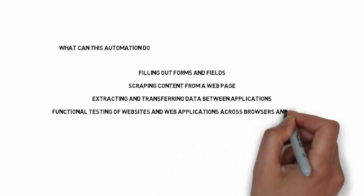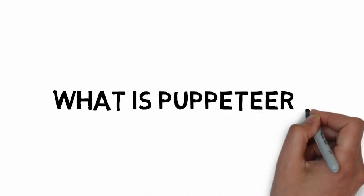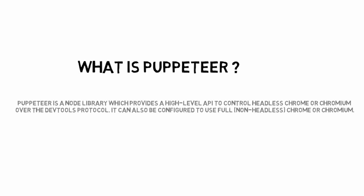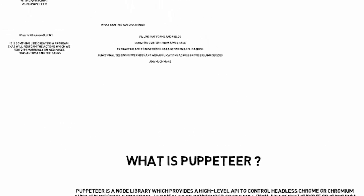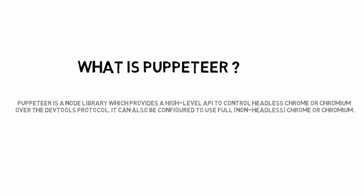In web scraping, a virtual browser will go to that website and can do pretty much everything you can do manually. Puppeteer is an open source library provided by Google which can be run in a Node.js program, allowing you to control a Chrome browser virtually. It can also run in headless mode — meaning we can run it without the UI component, which is useful when running on a server.